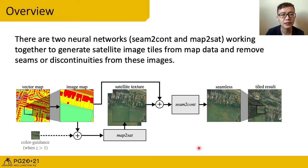In our work, there are two neural networks, seam2cont and map2sat, working together to generate satellite image tiles from map data and remove seams or discontinuities from these images. SSS uses a hierarchy of networks for different scales. A pair of networks at single scale level Z is shown here. First, a vector map of arbitrary extent is processed to create an image tile of map data. The map2sat network then performs a translation to the satellite texture domain. The seam2cont network removes visible tiling seams to create a seamless image. And the result is combined with neighboring tiles to create an image of arbitrary resolution.